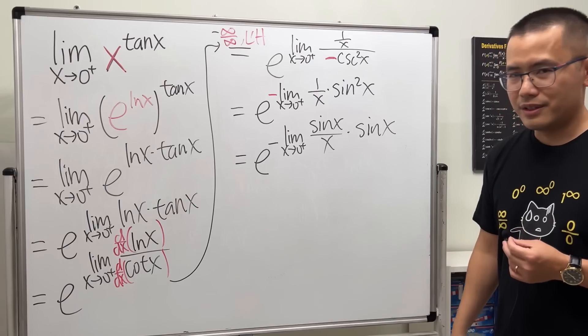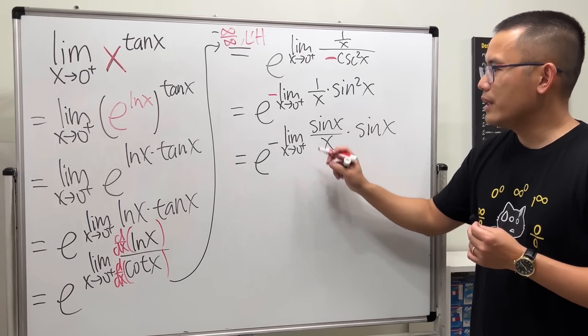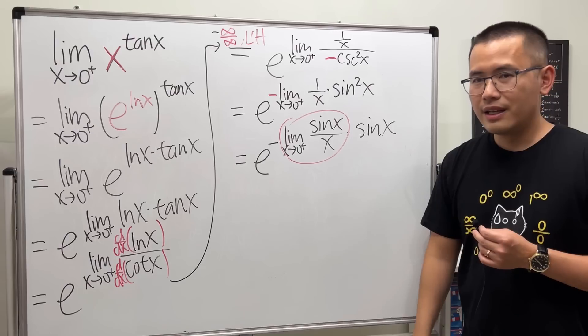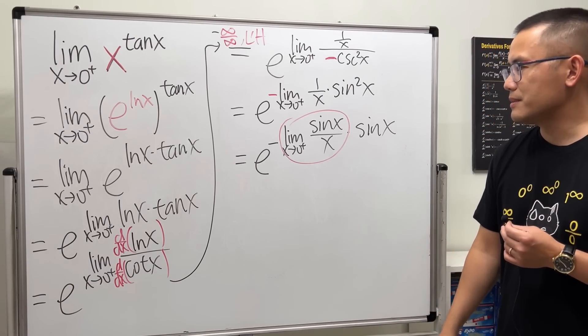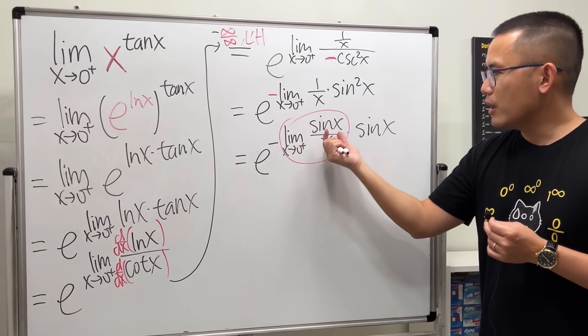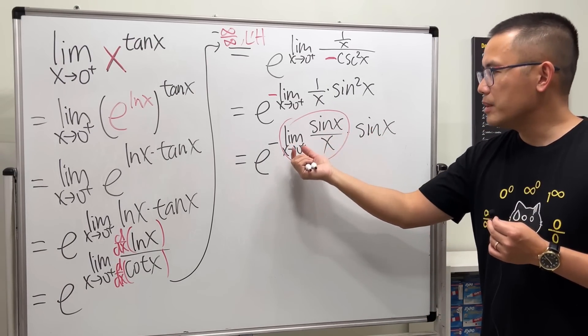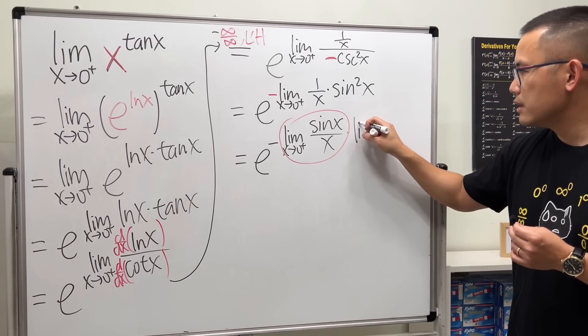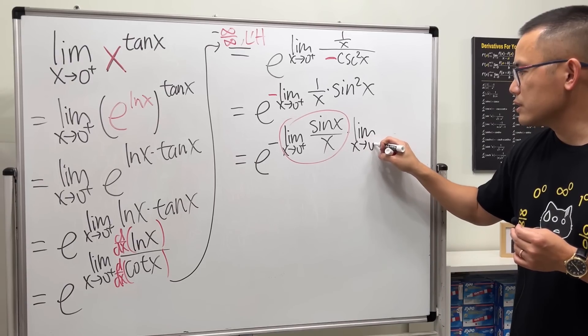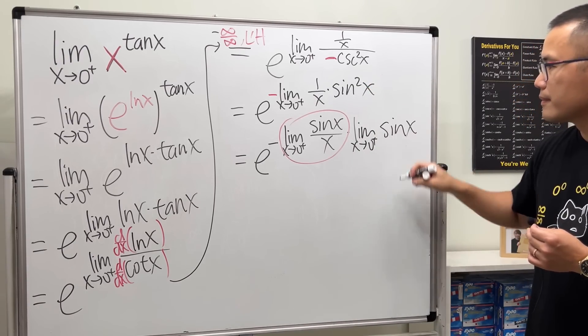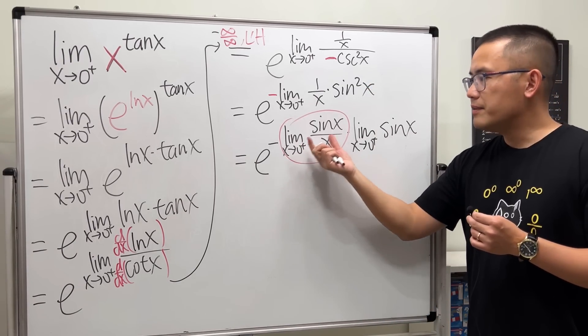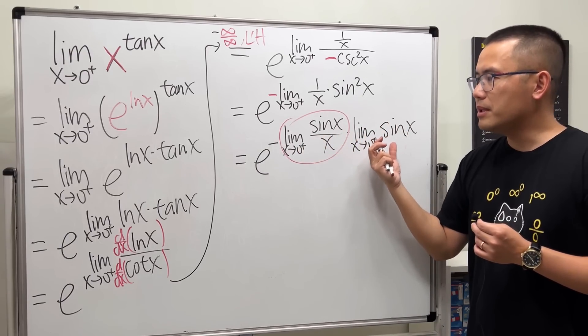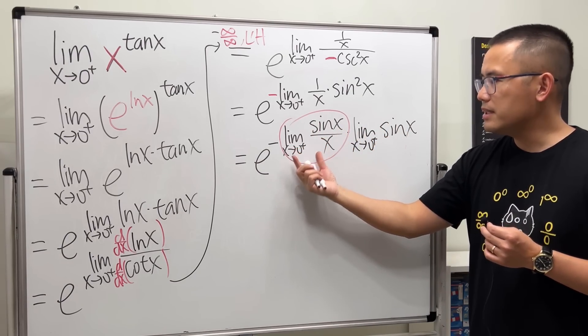Now why am I doing this? Well, because this way, this is a standard result. And technically what you have to do is when you take the limit of this times that, it's the limit of this times the limit as x approaching zero plus of sine x.